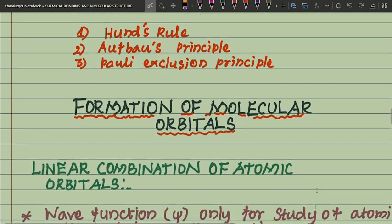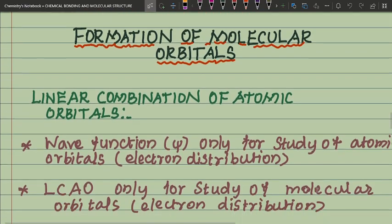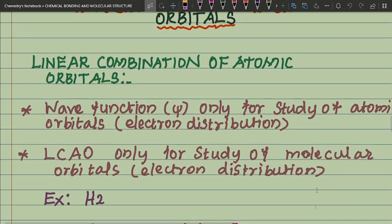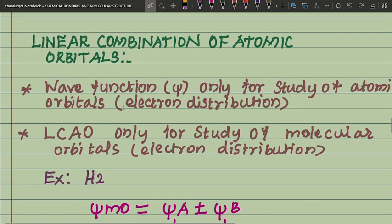The formation of molecular orbitals is explained by the Linear Combination of Atomic Orbitals, LCAO. The wave function psi is used for studying atomic orbital electron distribution, while LCAO is used only for studying molecular orbital electron distribution. This is the difference between them.